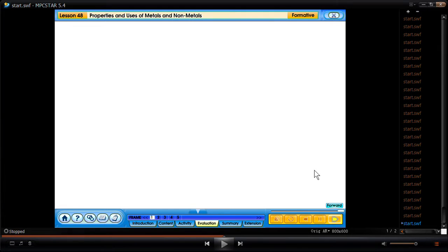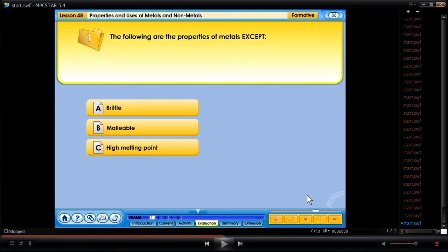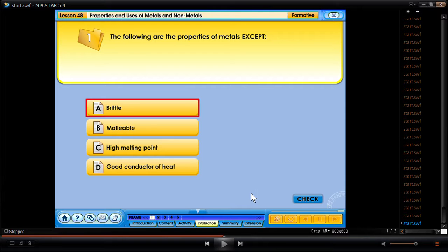The following are the properties of metals except: A. Brittle, B. Malleable, C. High melting point, D. Good conductor of heat. Your answer is correct.